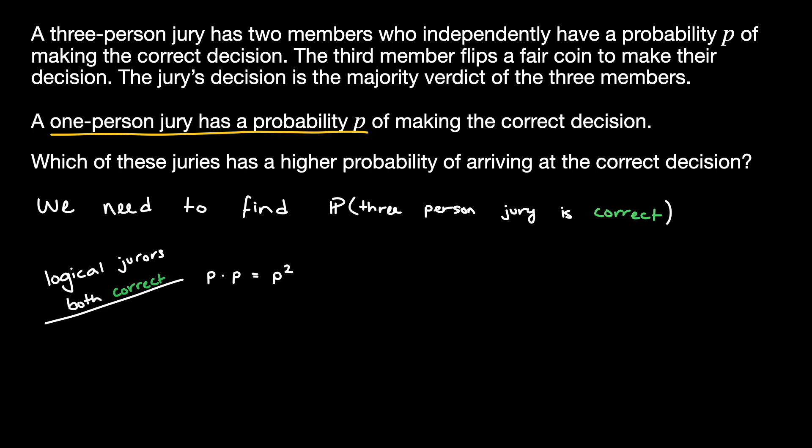In our second scenario, only one of the logical jurors is correct, and the random juror happens to be correct. The probability of this situation is P, the probability that the first logical juror is correct, times 1-P, the probability that the second logical juror is incorrect, times half, the probability that the fair coin gives the correct decision.